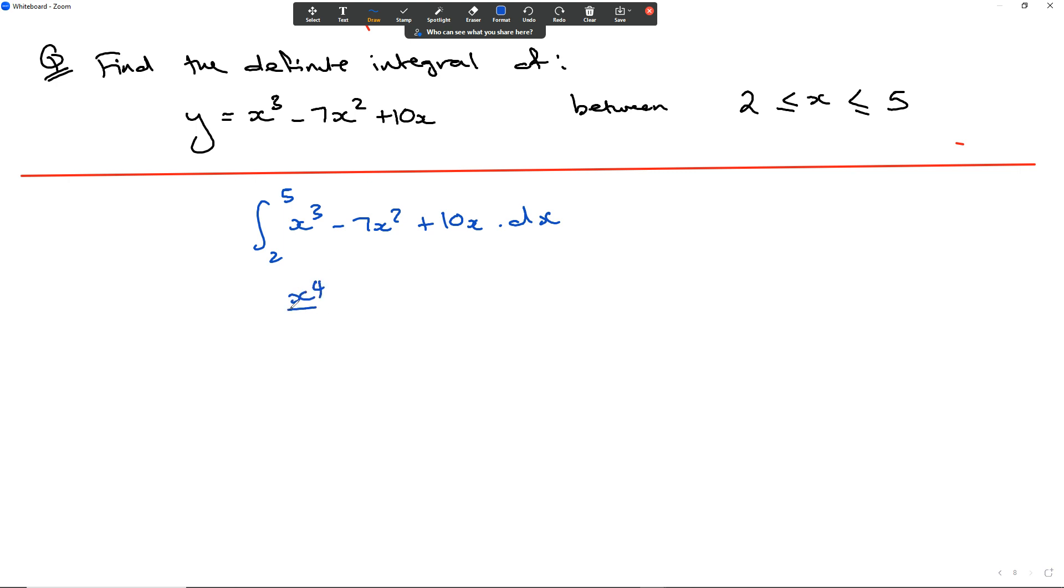This is going to become x to the power of 4 over 4, minus 7x to the power of 3 over 3, plus 5x squared. And then we keep that from 2 to 5.